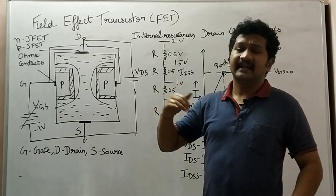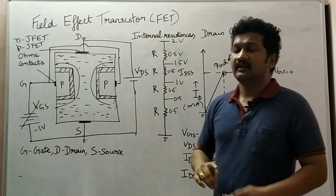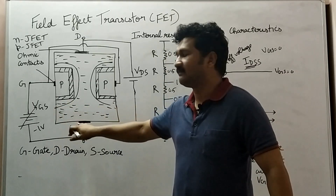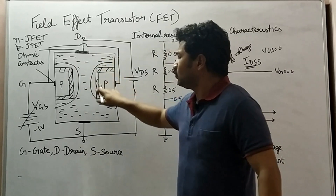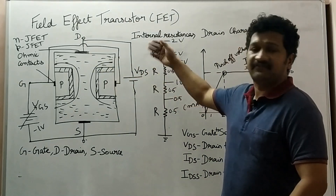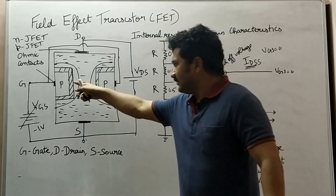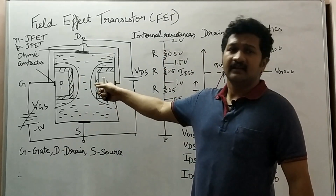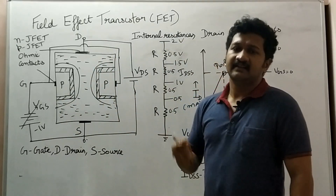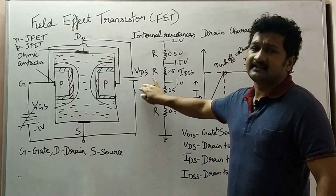The voltage applied to VDS to attain the pinch-off voltage will now be lesser, because VGS — being made negative at minus one volt or minus two volt — aids the depletion layer to come closer. So pinch-off is reached with less VDS. When reverse bias is applied, the depletion region increases, and after that increase, further application of VDS reaches the pinch-off voltage.